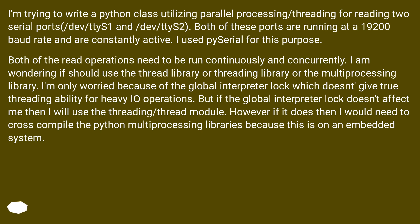I am wondering if I should use the thread library, threading library, or the multiprocessing library. I'm only worried because of the global interpreter lock, which doesn't give true threading ability for heavy IO operations. But if the GIL doesn't affect me, I'll use the threading module. However, if it does, I would need to cross-compile the Python multiprocessing libraries, because this is on an embedded system.